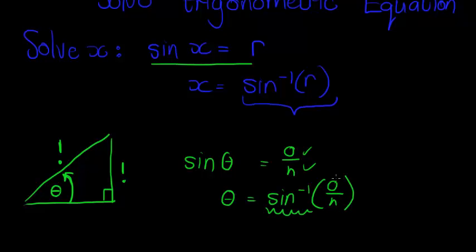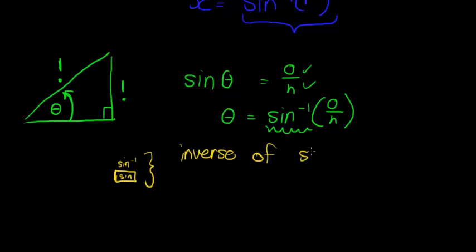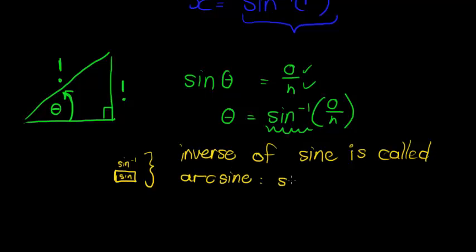How do I know what the inverse of opposite over hypotenuse is? Well, lucky for you, there's a button on your calculator. Where you have the sine button, right on top of it you have the arc sine button. The inverse of sine is called arc sine, and the arc sine symbol is sine to the power of negative one. In the next few videos, we will look at practical examples where we apply this to work out unknown angles in a right-angle triangle.